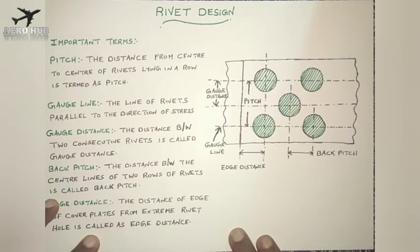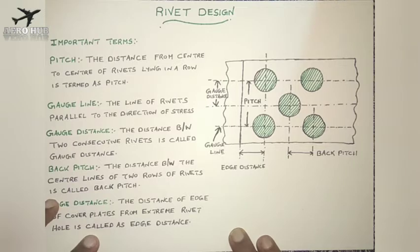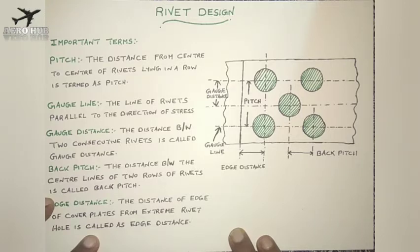These are the important terms we need to understand while designing a rivet. First is pitch — the distance between centers of rivets in the same row. Second is gauge line — the line passing through the centers of rivets, both vertical and horizontal, along which loads act. Third is gauge distance — the distance between two consecutive rivets. Then back pitch — the distance between two rows of rivets. Finally, edge distance — from the edge of the cover plate to the extreme rivet hole.